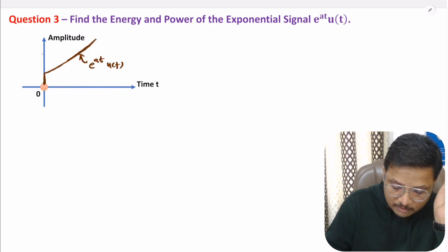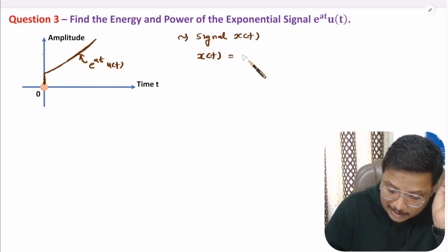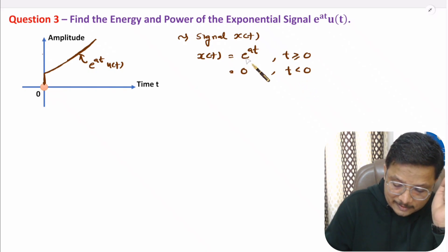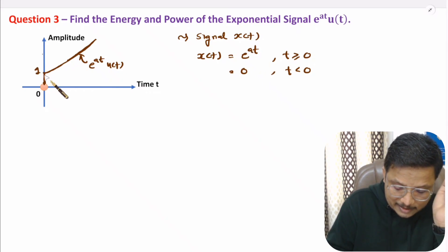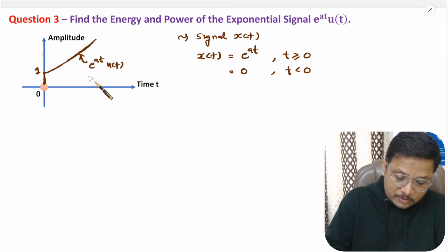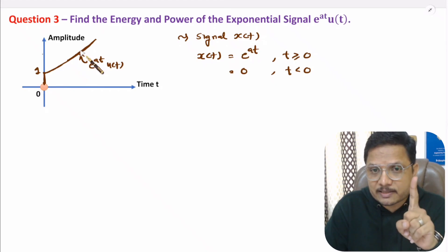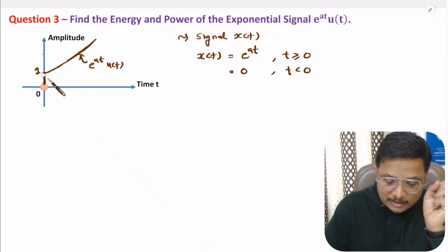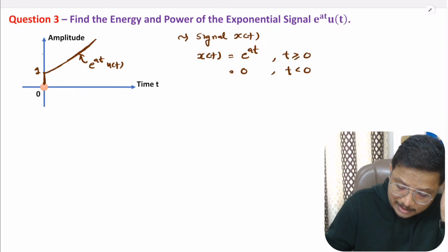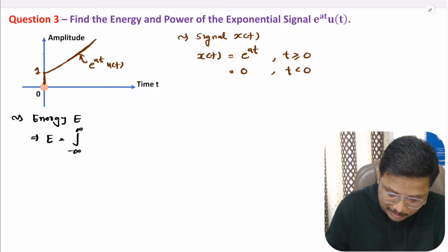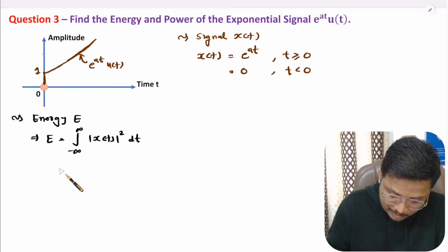So signal x(t) is e to the power at for t greater than or equal to 0, and 0 for t less than 0. At t equals 0, e to the power 0 is 1, so the magnitude is 1 here. Now we need to see whether this signal is periodic or not. If it is periodic, then find power, because periodic signals are power signals. But this is not a periodic signal, so we need to identify the energy of it.